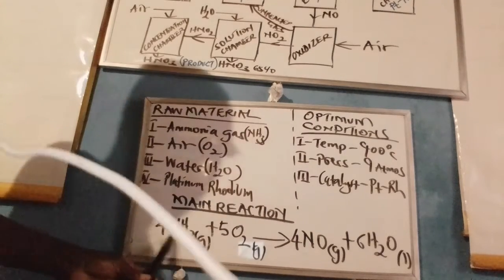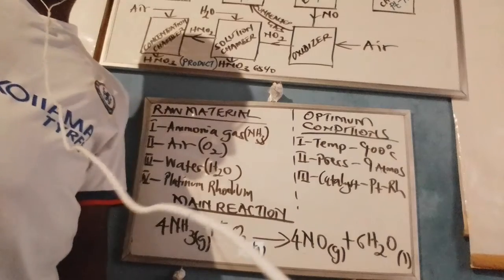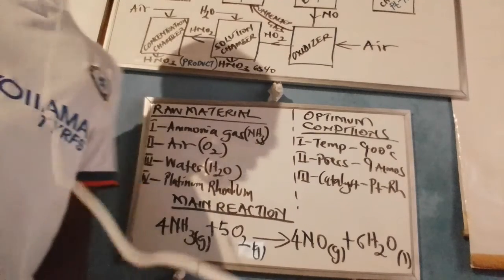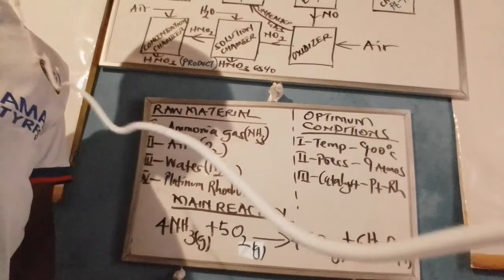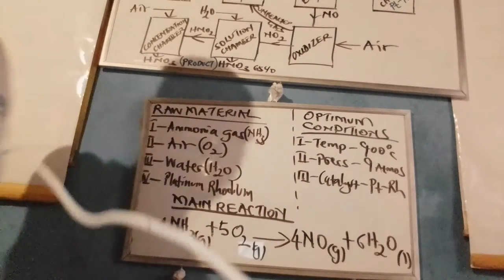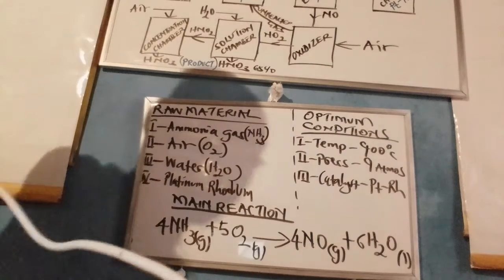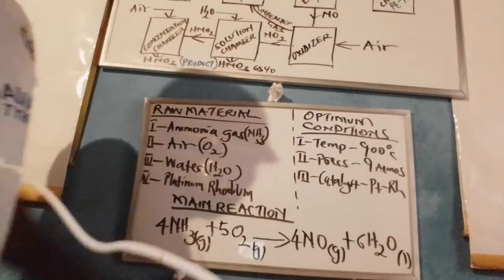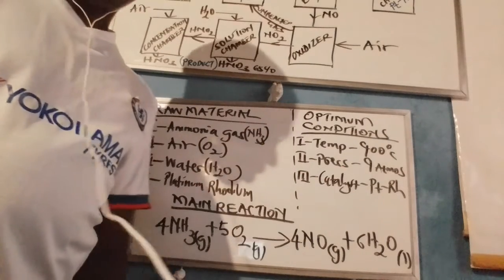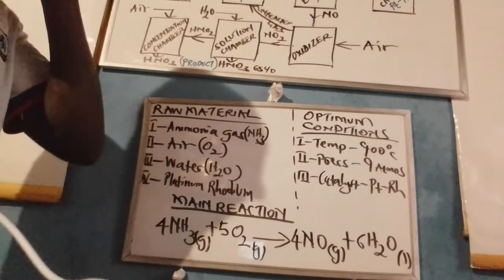As ammonia combines with oxygen to form nitrogen monoxide gas, we find that nitrogen monoxide gas is not readily soluble in water, and therefore we have to oxidize it to form the soluble gas nitrogen dioxide. The reaction between ammonia and oxygen is referred to as the catalytic oxidation of ammonia, and occurs at specific optimum conditions: 900 degrees Celsius, optimum pressure of 9 atm, and the catalyst is platinum-rhodium.